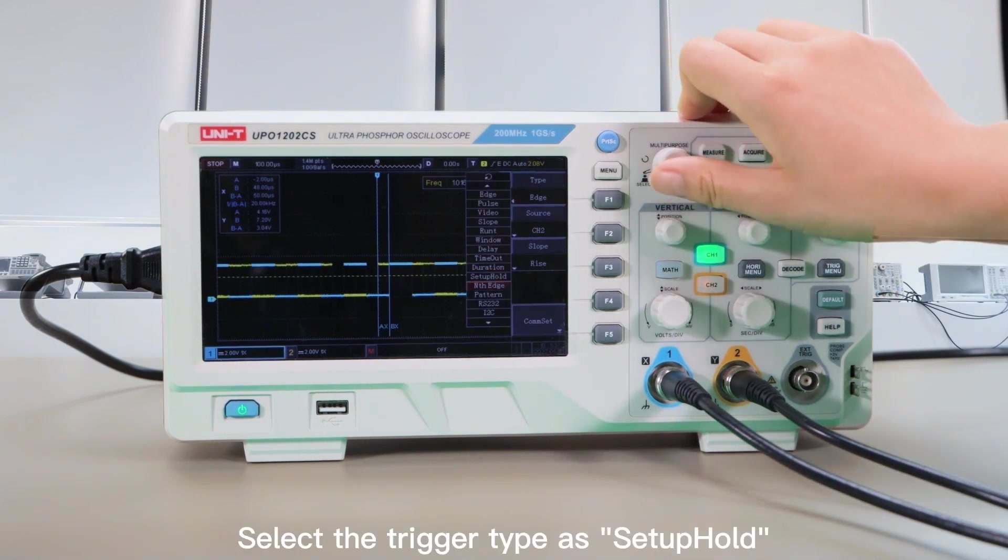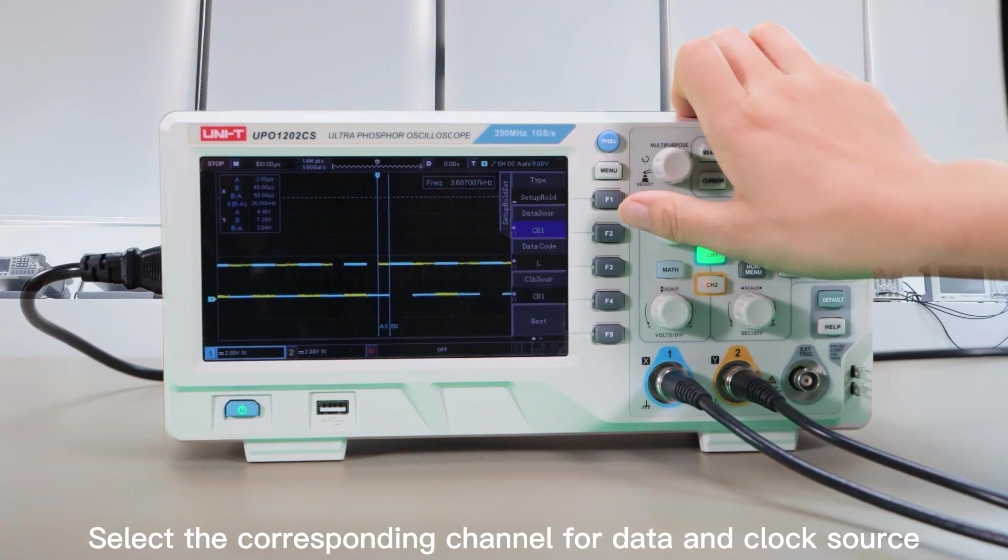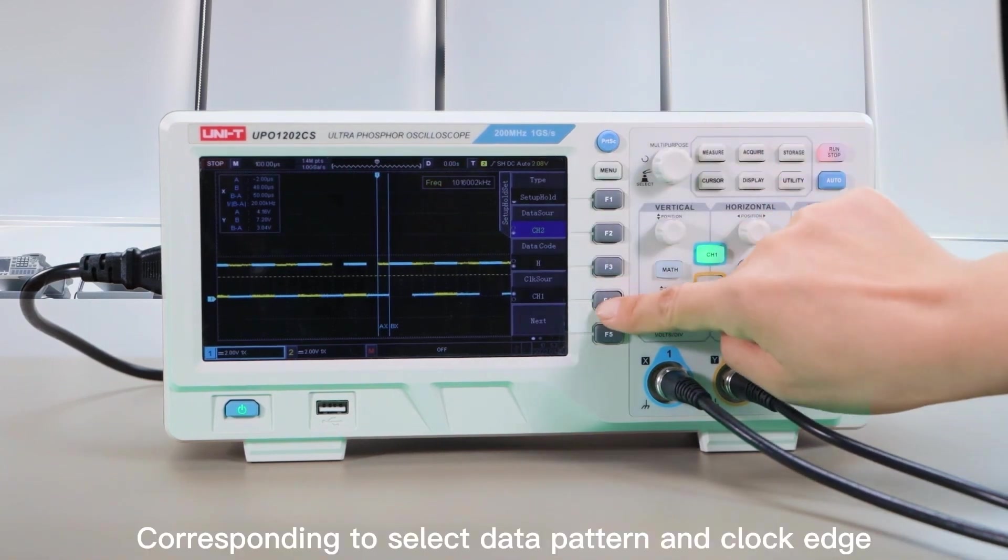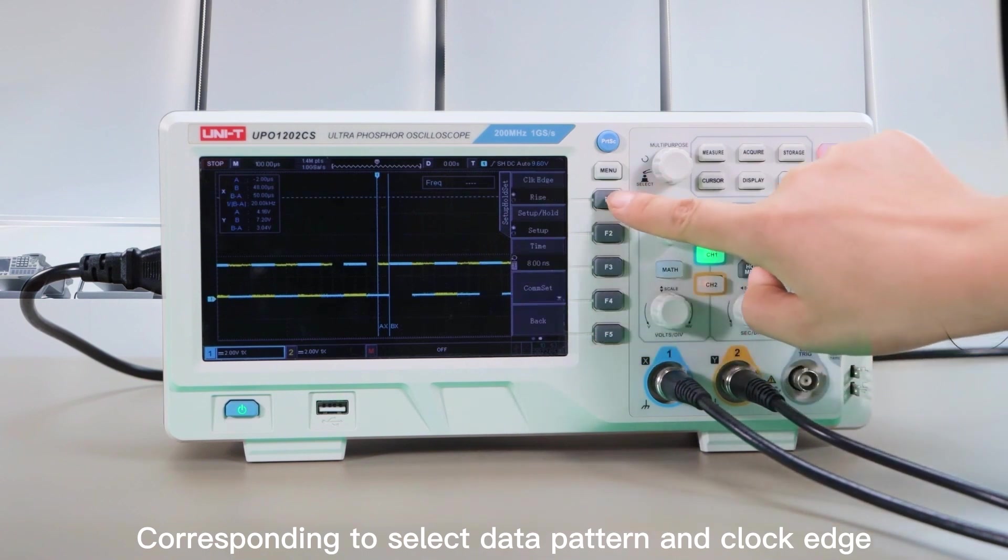Select the trigger type as setup hold, select the corresponding channel for data and clock source, and select data pattern and clock edge.